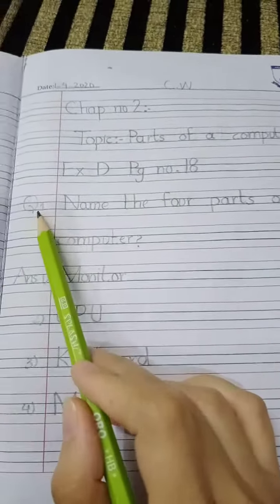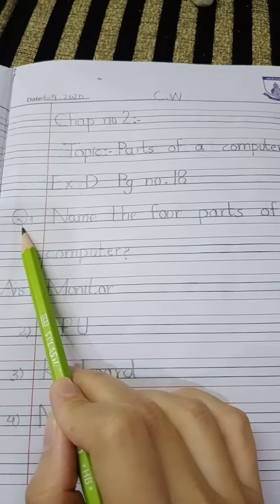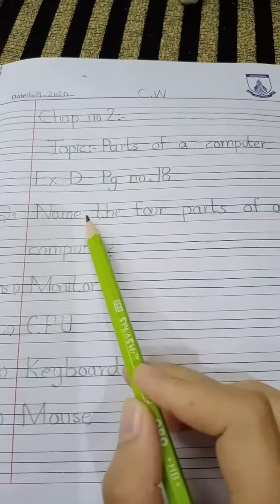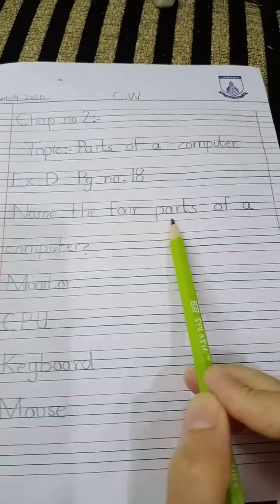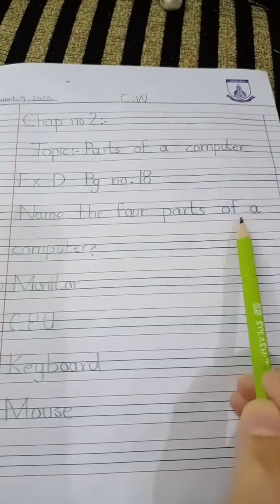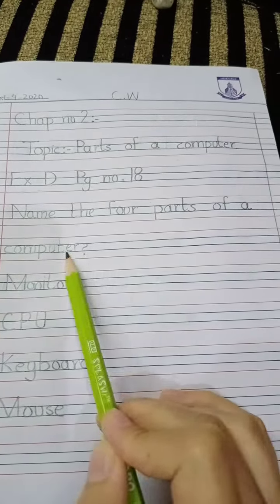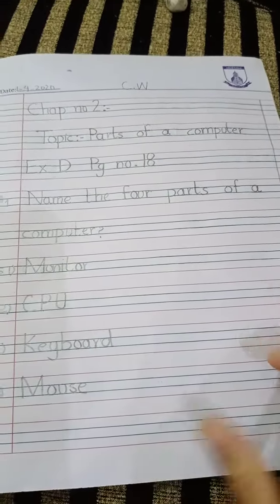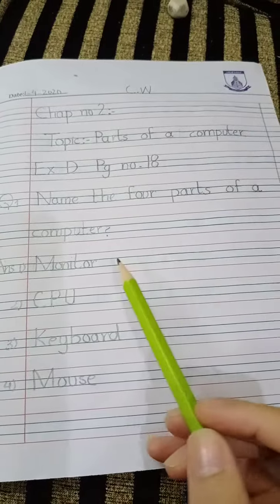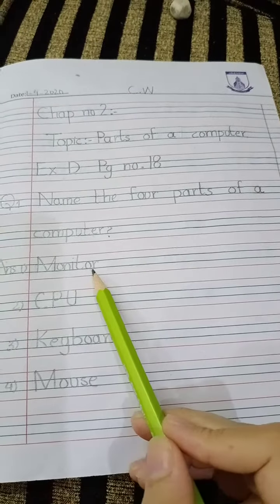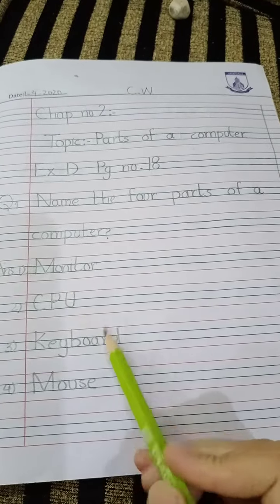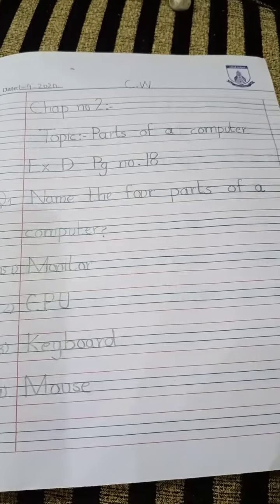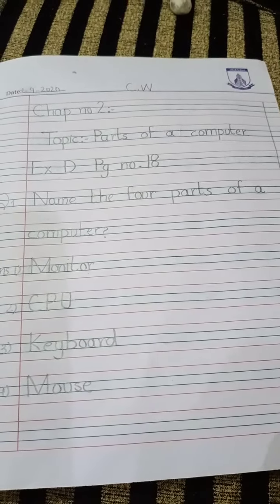Write question number one: Name the four parts of a computer. You have to write the four parts of a computer — monitor, CPU, keyboard, and mouse. These four are the parts of a computer.